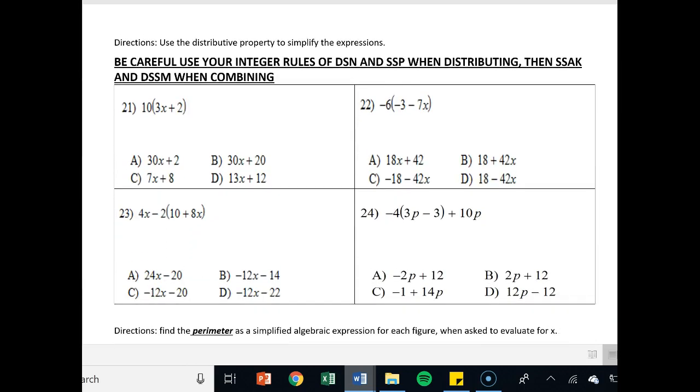Remember, when you are distributing, you are multiplying, not adding. So we're saying 10 times 3x is 30x and 10 times 2 is 20. So I want to see that multiplication. I want to see those arrows on tomorrow's test. Make sure you're multiplying by both terms. And then again, be aware of the signs. Like on this next one, negative 6 times a negative 3 is a positive 18. And then a negative 6 times a negative 7x is a positive 42x. Don't forget those variables. And so B is your answer there.